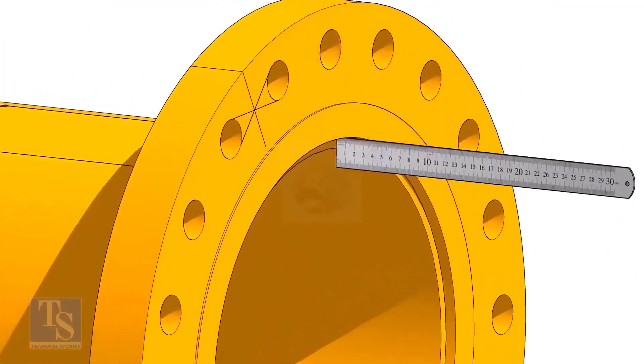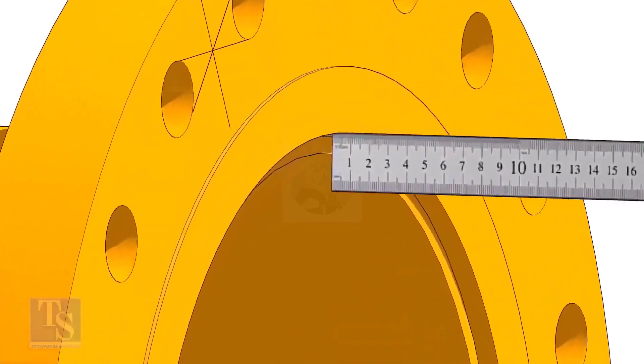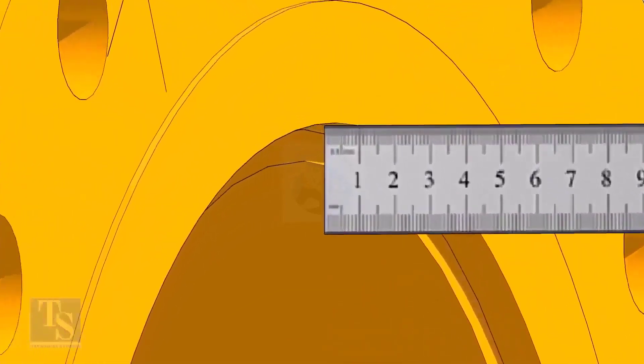Fix the distance between the flange face and the pipe face. Usually, this measurement is equal to the thickness of the pipe.